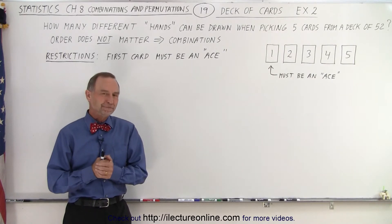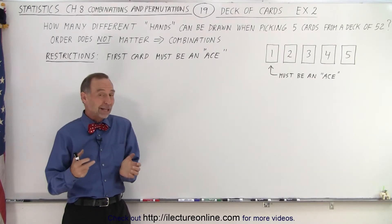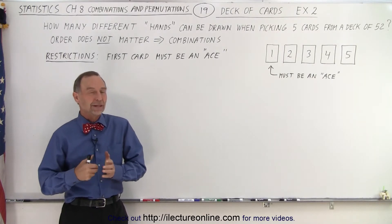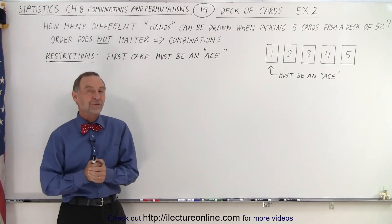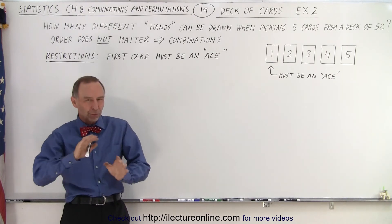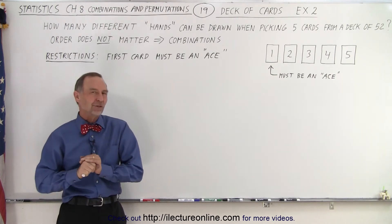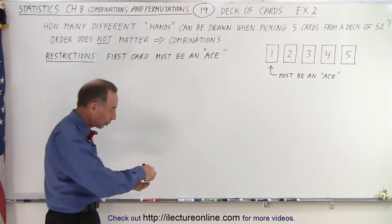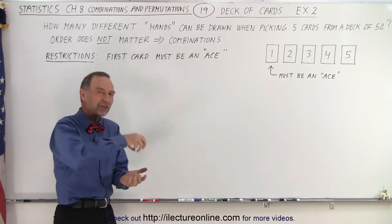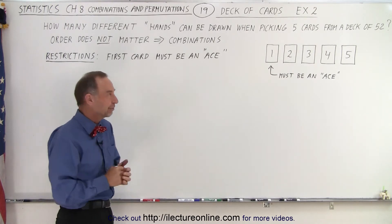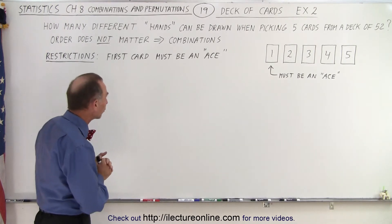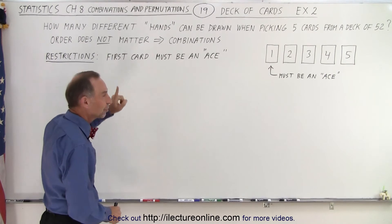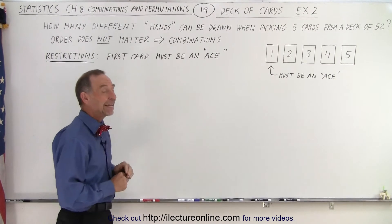Welcome to our Lecture Online. I think it's a good idea that we try a few more examples using a deck of cards, and we're going to add some additional restrictions starting with this one. Here we're still going to pick five cards out of a deck of 52 cards, but the restriction is that the first card must be an ace.